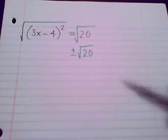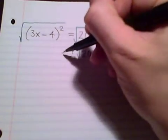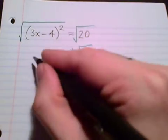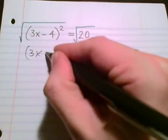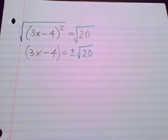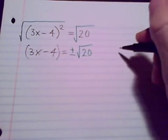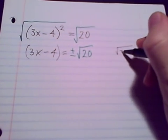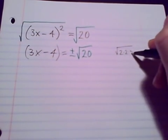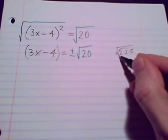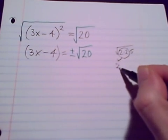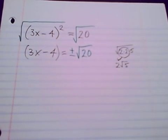Not a perfect square on the right side, so I have just brought down square root of 20. Square root and square cancel, 3x minus 4. This radical needs to be simplified. 20 is 2 times 2 times 5. I can simplify to 2 radical 5.